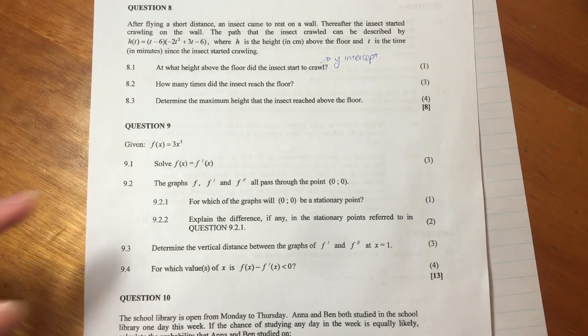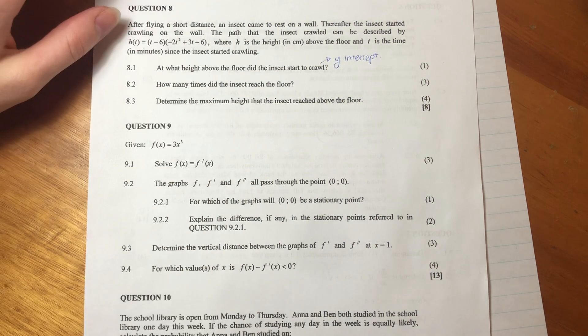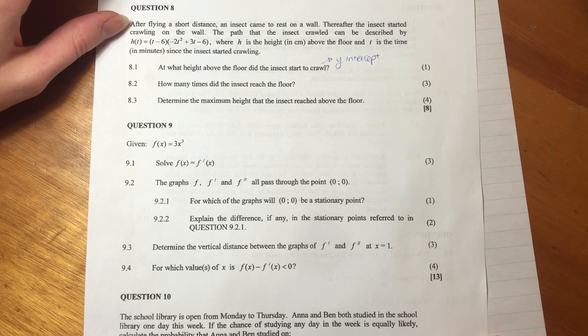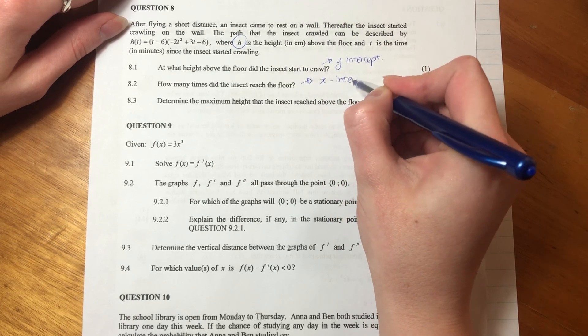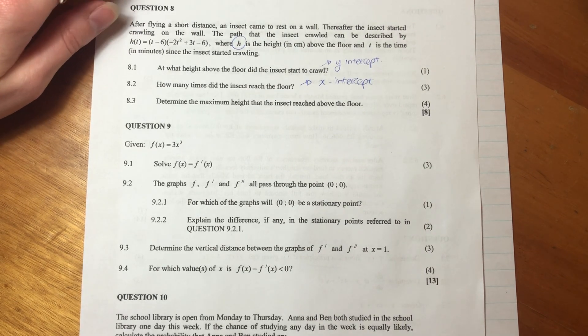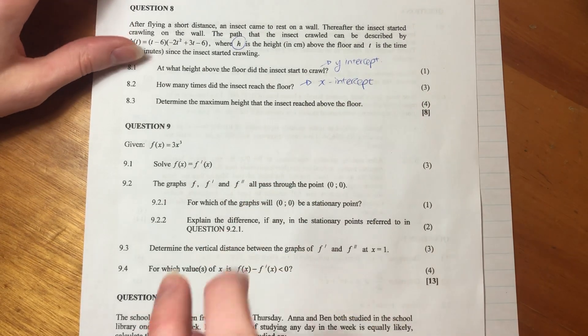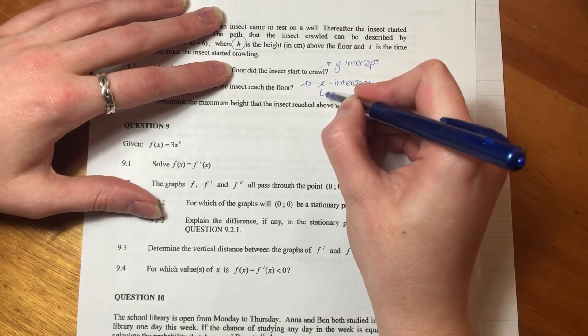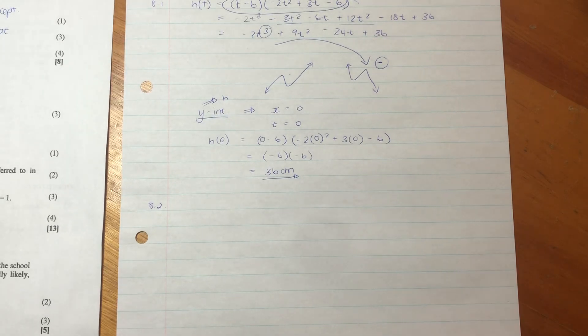Let's go on to 8.2. So it says, how many times did the insect reach the floor? How many times did the insect reach the floor? So what it wants to know is where the height equals 0. So basically what it's saying here is, what's the x-intercept? So they're just literally asking us things we know, but they're asking us in this weird scenario with this weird little bug. But it's things we know.